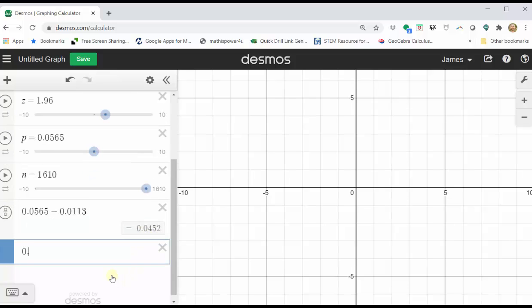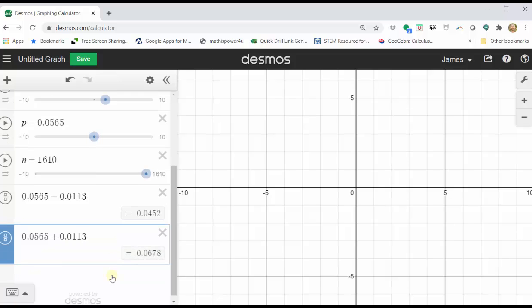In cell seven, we enter 0.0565 plus 0.0113. The upper bound of the 95% confidence interval is 0.0678. Let's go ahead and record this.